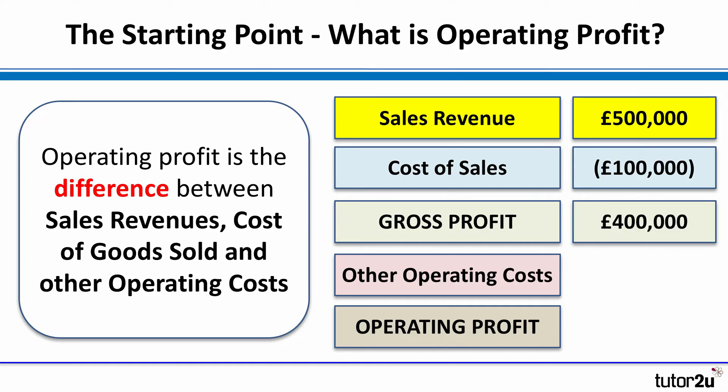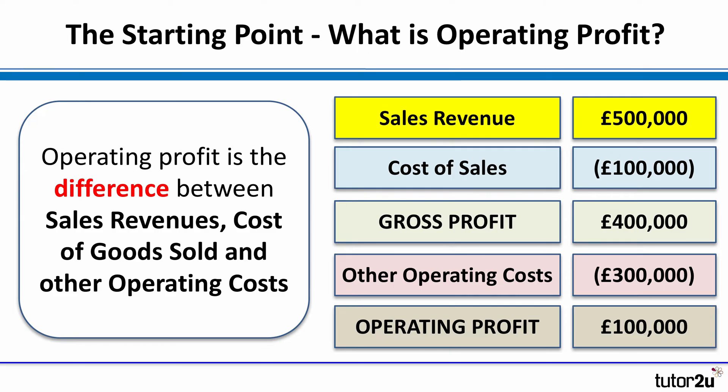But of course, that's not the final profit of the business, because we need to take account of these other operating costs that aren't in cost of sales. Let's imagine they were 300,000 pounds. Therefore, the gross profit of 400,000 less the 300,000 of operating costs gives us an operating profit of 100,000 pounds.